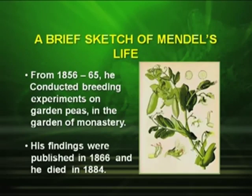From 1856 to 1865, he conducted breeding experiments in the garden pea in the monastery. His findings were published in 1866 and he died in 1884.